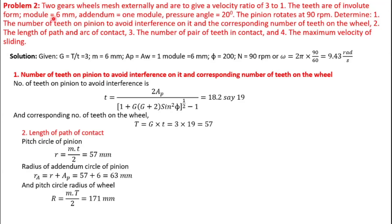This is a CAMP problem. Two gears mesh externally to give a velocity ratio of 3 to 1. The teeth are of involute form, module is 6 mm, addendum is equal to 1 module, and the pressure angle is 20 degrees. The pinion rotates at 90 rpm. We have to determine: first, the number of teeth on the pinion to avoid interference and the corresponding number of teeth on the wheel; second, the length of path and arc of contact; and third, the number of pairs of teeth in contact and the maximum velocity of sliding.